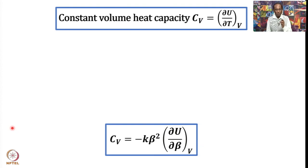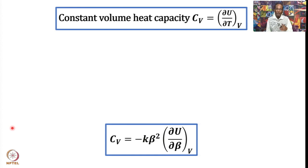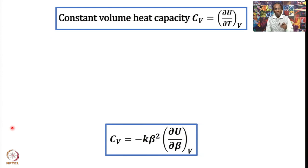Heat capacity under constant volume conditions and under constant pressure conditions are both important, and both are interrelated. Cp minus Cv is equal to NR for a perfect gas. Cp minus Cv can be expressed in different forms for non-ideal systems. But we will not get into that kind of discussion at present. In our canonical ensembles, we have usually been discussing constant volume conditions, so let us stick to constant volume heat capacity, and then discuss how to get constant pressure heat capacity from it.